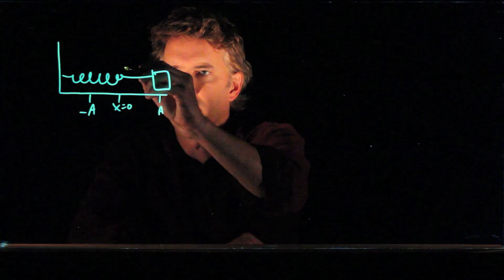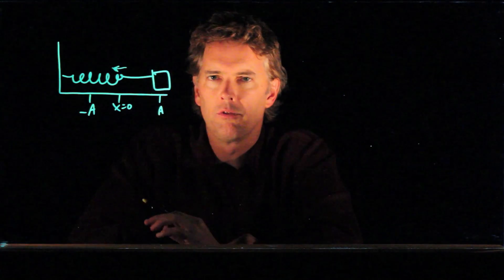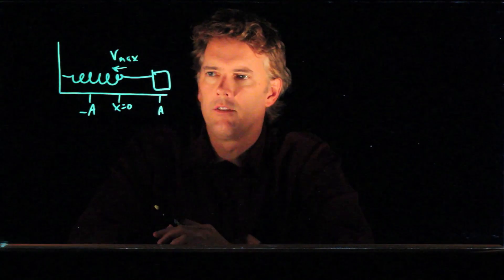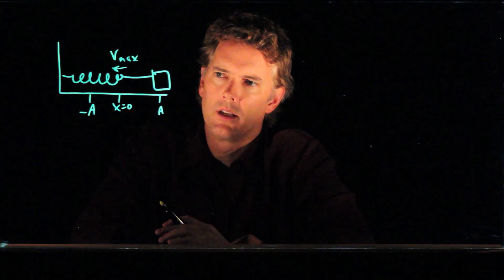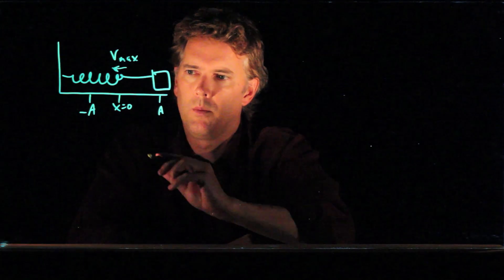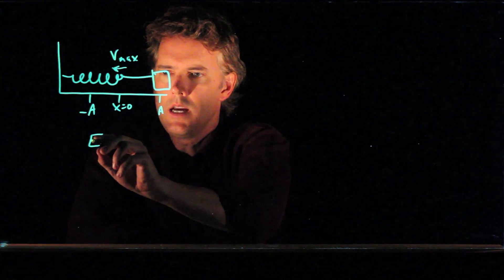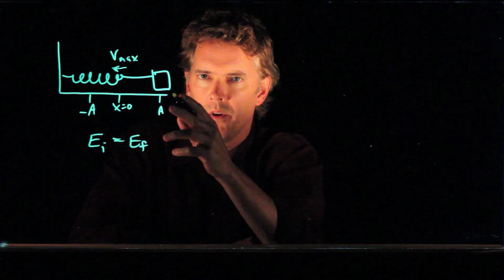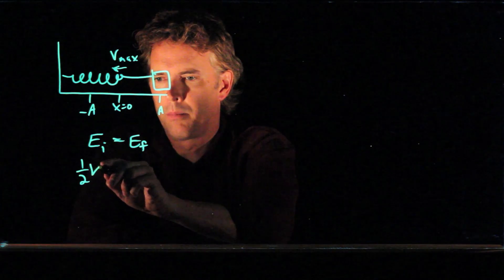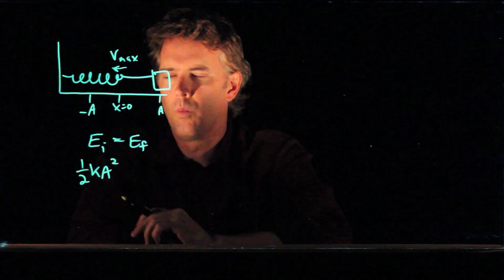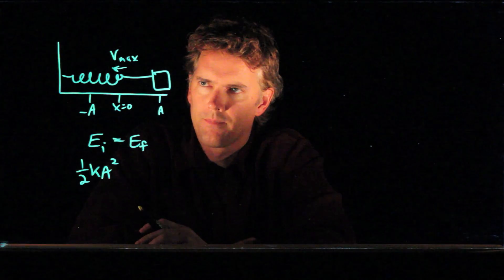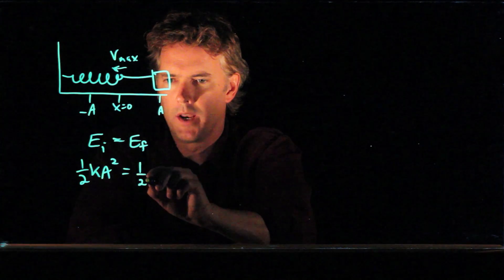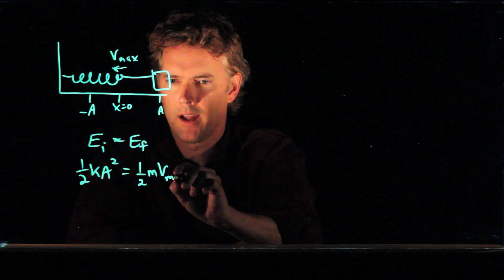So where is the velocity going to be a maximum? Well the velocity is a maximum when it goes back through the equilibrium position. And so if we think about conservation of energy here, what can we say? E initial equals E final. When we start we are all spring potential energy, one half k a squared. When we go back through equilibrium, we are all kinetic energy, one half m v max squared.